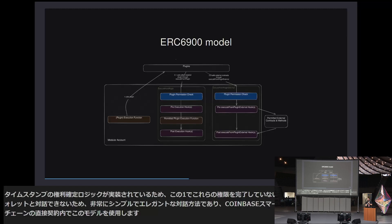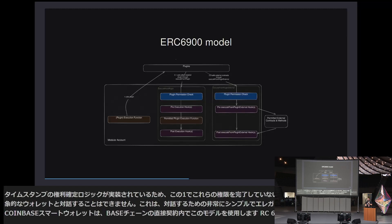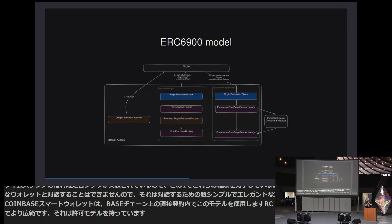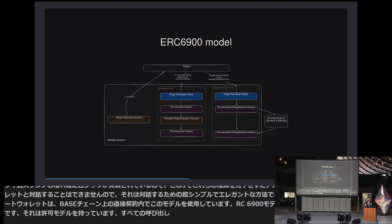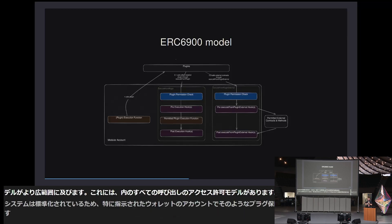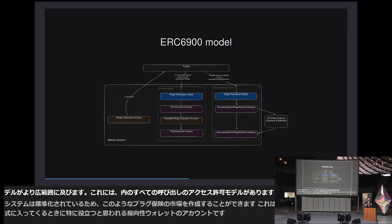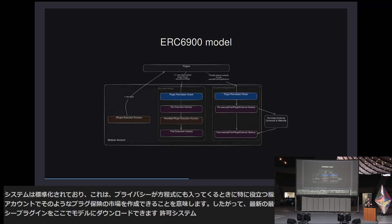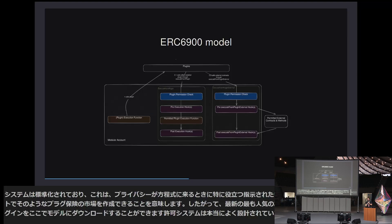The ERC6900 model is more extensive. It has a permission model and all calls in the plugin system are standardized, which means we can create a marketplace for such plugins in account-abstracted wallets — especially useful when privacy comes into the equation. You can just download the latest most popular privacy plugin into your model. The permission system is really well designed, so access control enjoys a good threat model. You explicitly have to give time-based and capability-based access properties to the plugins you install.